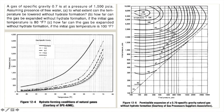Using the chart for gas gravity 0.7 at 1000 psi, we find that gas hydrate will form below 65°F. Therefore the temperature should not be lowered below 65°F to avoid hydrate formation. For Question 2, using the same gas gravity 0.7 and initial pressure of 1000 psi: how far can the gas be expanded without hydrate formation if the initial gas temperature is 80°F?